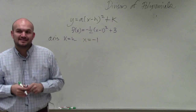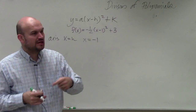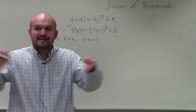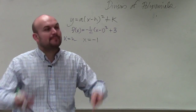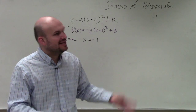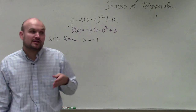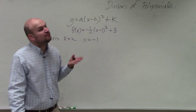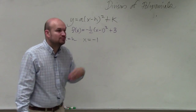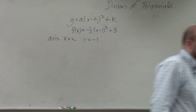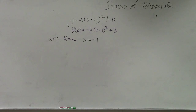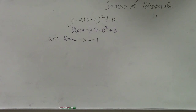Remember, the axis of symmetry, ladies and gentlemen, is a line. It's not a number, it's not a point. It's a line that the graph is symmetrical about — and not only that, it's a vertical line. To represent a vertical line, you need to use x equals. That's how you graph a vertical line. So the axis of symmetry is x equals negative 1.